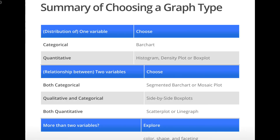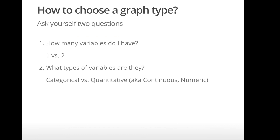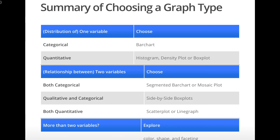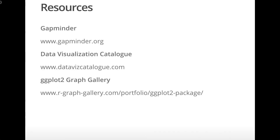This concludes our brief review of choosing a graph type. In summary, we covered some of the more common graphs: the bar chart, mosaic plot, histogram, density plot, box plot, scatter plot, and line graph. To choose from among these graphs, we asked two questions about our data: how many variables do I have, and what types of variables are they? We also previewed what you might do if you want to visualize more than two variables. With this basic toolkit, you can begin to visually explore your data and gain insights and possibly surprise findings. But this is only the tip of the iceberg for the world of data visualization — we encourage you to explore these topics on your own.